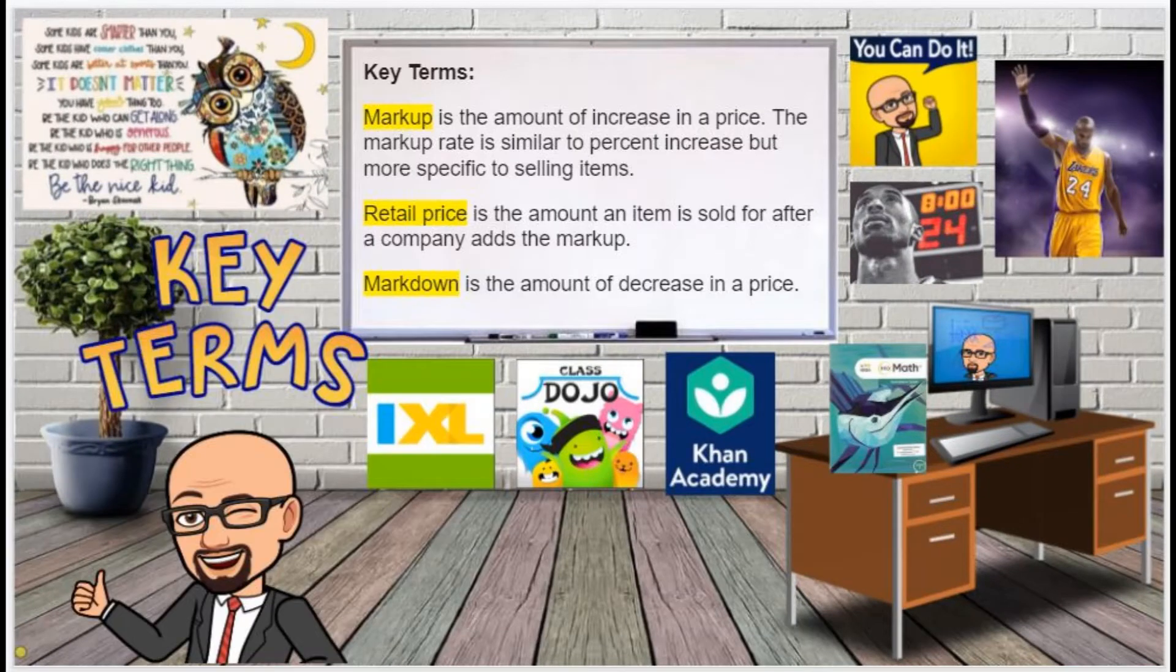But first, let's look at some key terms. Markup is the amount of increase in a price. The markup rate is similar to percent increase, but more specific to selling items. Retail price is the amount an item is sold for after a company adds the markup. The last key term for this lesson is markdown. It is the amount of decrease in a price.